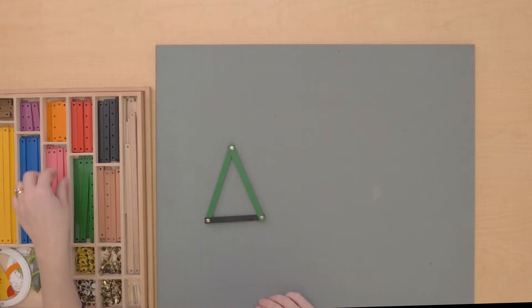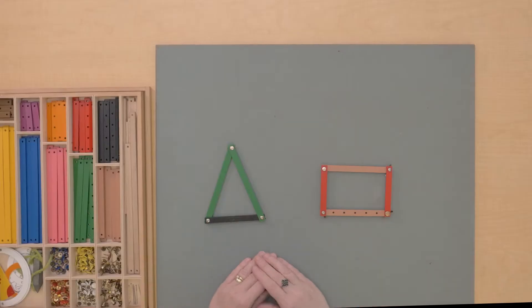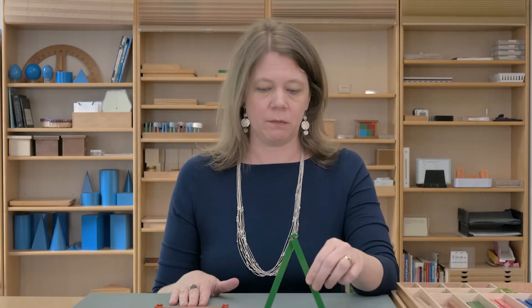I'm going to make a triangle and then also a rectangle. So I've got a triangle and a rectangle. Now take a look at what happens when I hold this triangle up. It maintains its shape. It's very sturdy and stable.